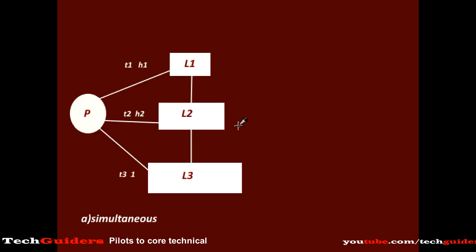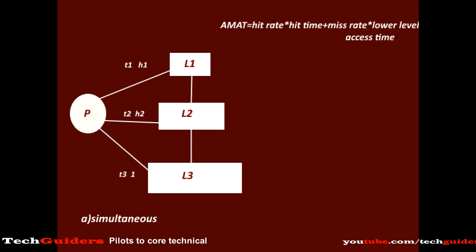Now we can apply this equation recursively to find the average memory access time for any number of levels. Consider three levels L1, L2, and L3. The access time is T1 with hit ratio H1, access time T2 with hit ratio H2, and access time T3 — since this is the last level, the hit rate is 1. The general equation is: hit rate × hit time + miss rate × lower level access time. Starting from the highest level: average memory access time = H1 × T1 + M1 × (lower level access time at L2).